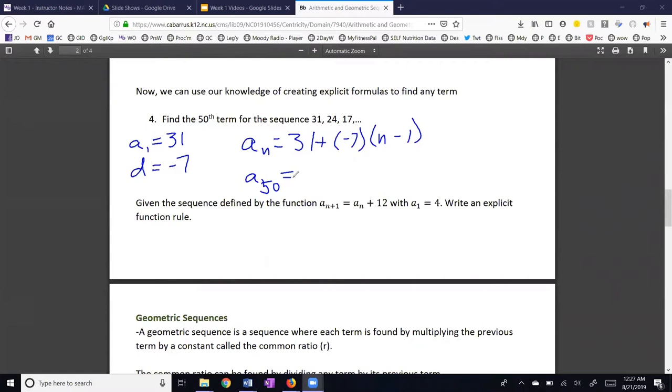A50 is going to be 31 plus negative 7 times 50 minus 1. And 50 minus 1 is 49. And when we run this into a calculator, we get negative 312. A50 is equal to negative 312.